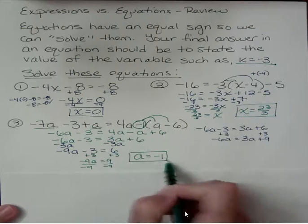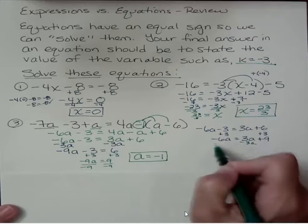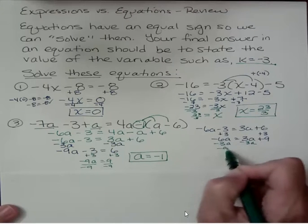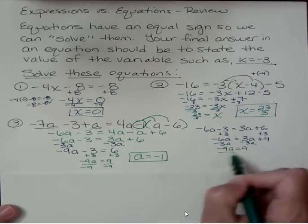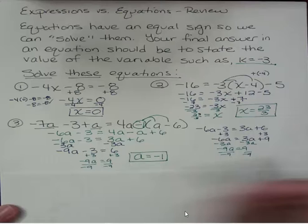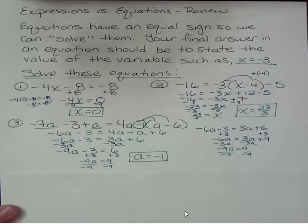What about over here? If I subtracted 3a from both sides, I get negative 9a equals negative 9. And dividing, I get the same exact thing, a equals negative 1. So you could have also, at this stage, added 6a to both sides. That would have been fine. You would have gotten the same answer.